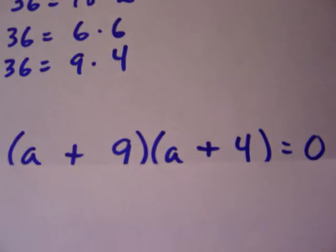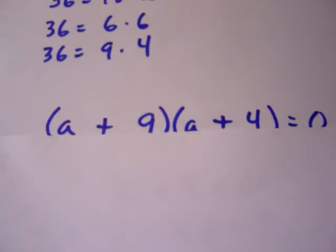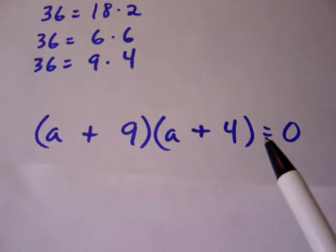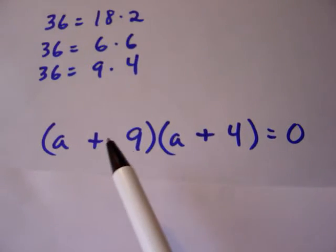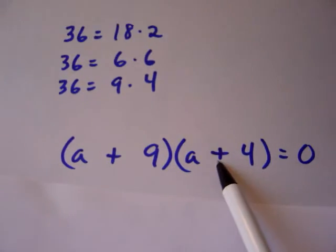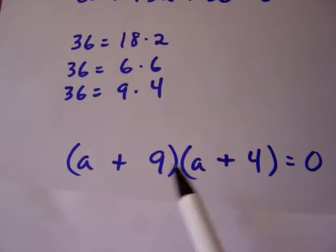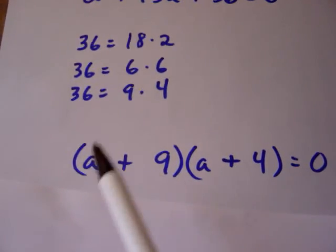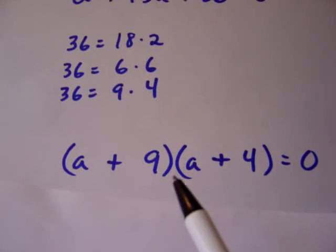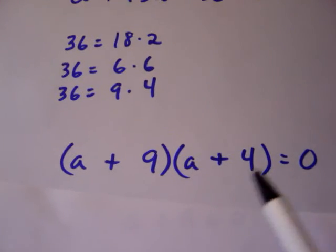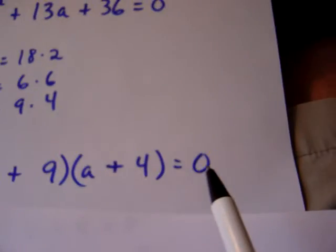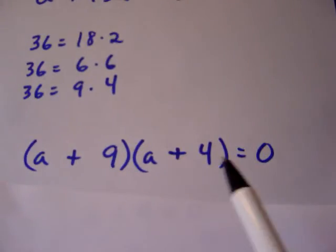There's something in algebra called the zero product property. The zero product property says that when you have the product of two factors and they yield zero, either this factor times something has to give us zero, or this times zero gives us zero. So, either the a plus 9 factor has to become zero, or the a plus 4 factor has to become zero. Therefore, we're going to look at two situations: a plus 9 equaling zero, or a plus 4 equaling zero.